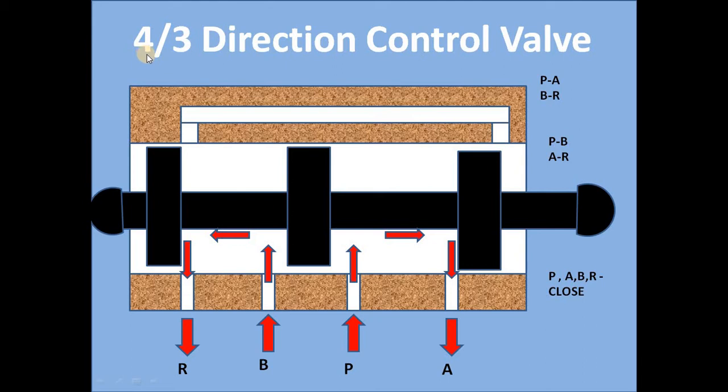So first of all, in Direction Control Valve, we need to know what is meant by 4, what is meant by 3. 4 means there are 4 ports. The names of the 4 ports are P, A, B and R. P means pump port, A and B are actuator ports and R is reservoir port.